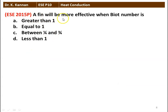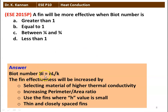Next question: A fin will be more effective when Biot number is (1) greater than 1, (2) equal to 1, (3) between 1/4 and 3/4, or (4) less than 1? The Biot number is given by Bi = H·L / K. Fin effectiveness increases with higher thermal conductivity, higher perimeter-to-area ratio, lower heat transfer coefficient H, and thin closely spaced fins. Since a lower Biot number means high thermal conductivity and low H, the fin will be more effective when the Biot number is less than 1.